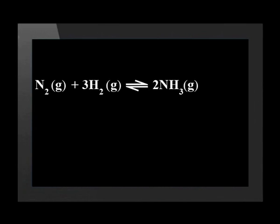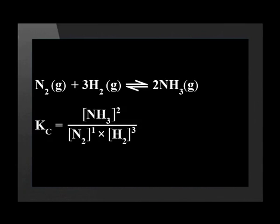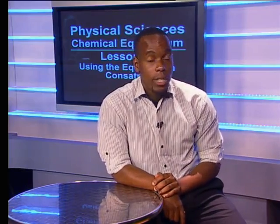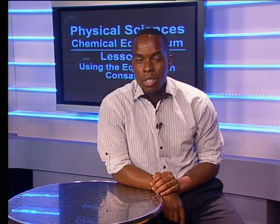For the reaction of nitrogen and hydrogen to form ammonium, the equilibrium constant, or Kc, is always the concentration of the product over the concentrations of reactants. But this is only true for a homogeneous reaction, or one in which all the substances are in the same phase. In this homogeneous reaction, all the molecules are gases.